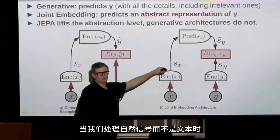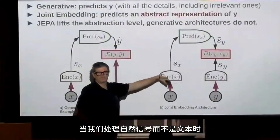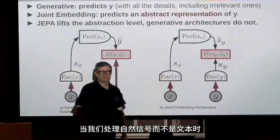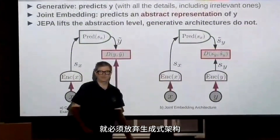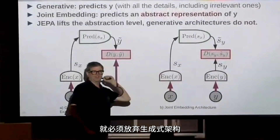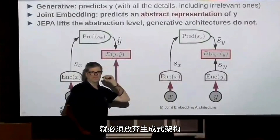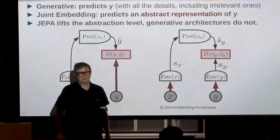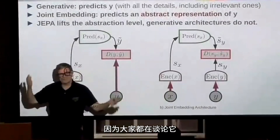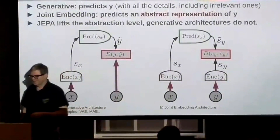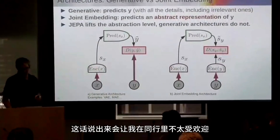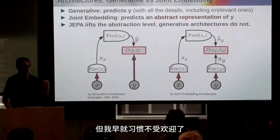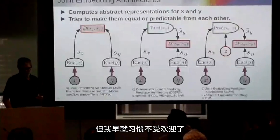You have to learn abstract representations to be able to do things. So if we're going to work with natural signals as opposed to text, we're going to have to abandon generative architectures — which is funny because everybody is talking about generative AI. It's not making me very popular among some of my colleagues, but I'm used to being unpopular.